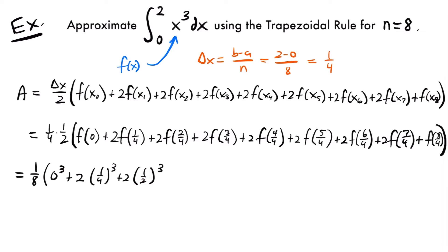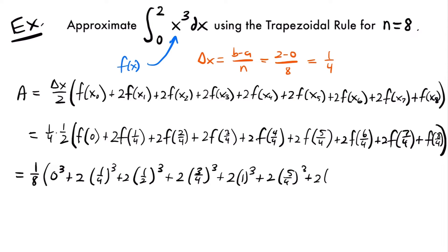We're plugging each x value into x cubed, so we cube each value. Continuing, we have plus 2 times 3 fourths cubed, plus 2 times 1 cubed, plus 2 times 5 fourths cubed, plus 2 times 3 halves cubed — since 6 fourths reduces to 3 halves — then plus 2 times 7 fourths cubed, and finally plus 2 cubed, because 8 fourths divided by 4 is 2.